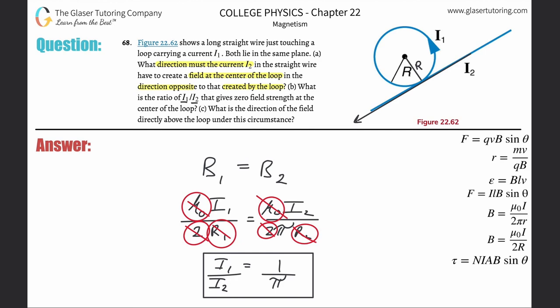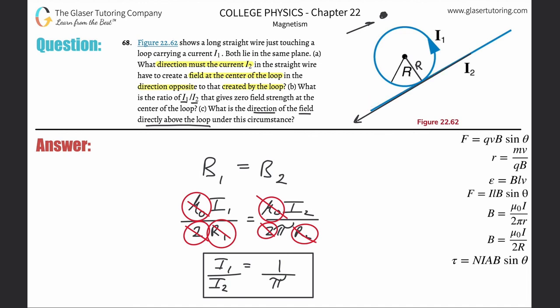Part C asks for the direction of the field directly above the loop under this circumstance. Looking at the picture, we consider a point directly above the loop. Using right-hand rule number two on the straight wire with the thumb pointing to the left, the magnetic field above the wire is pointing into the page — everywhere above the wire, it's all pointing into the page.